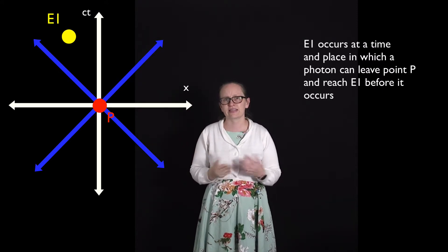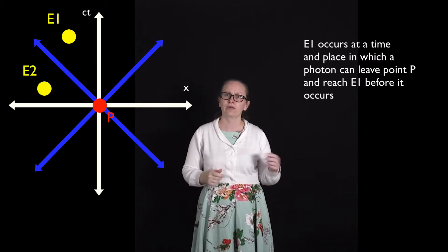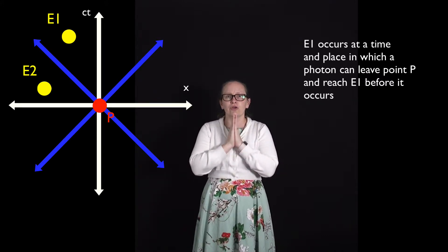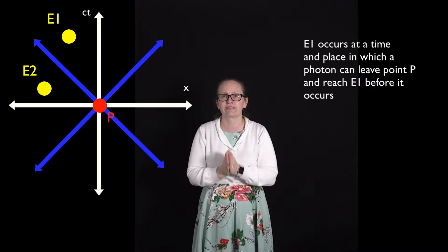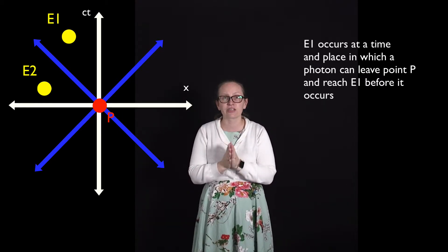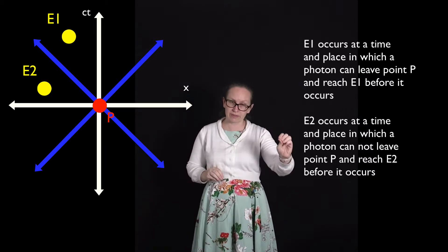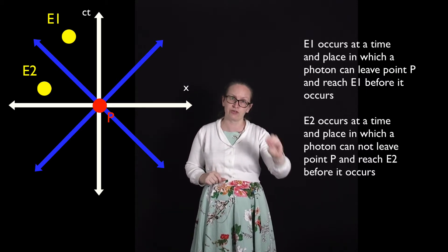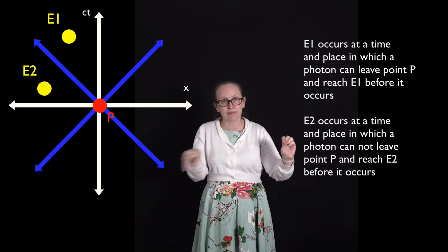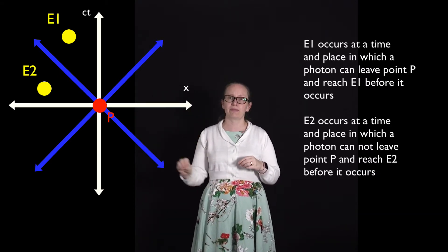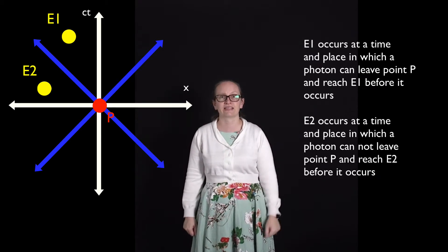Let's consider a second event, event 2, which is outside the light cone as shown. Event 2 can't be causally related to P, as there just isn't time for the light to travel from P to the location where event 2 takes place in the time indicated. So it's absolutely impossible for point P and event 2 to be causally related.